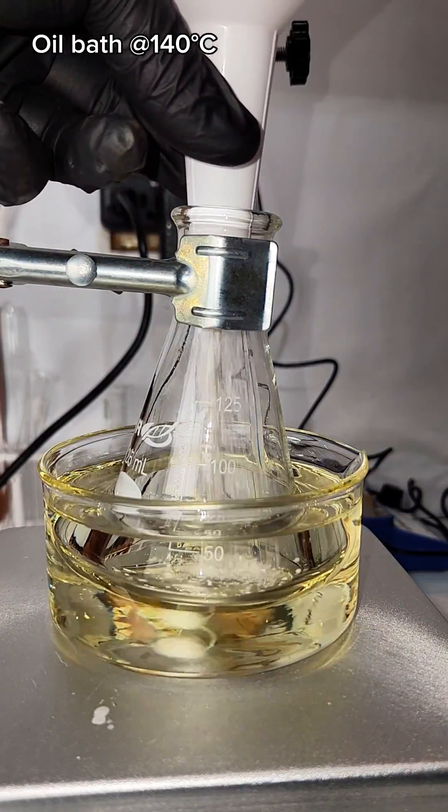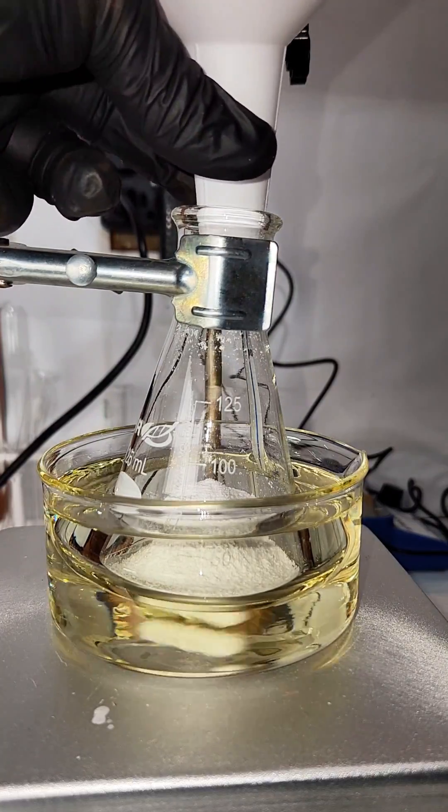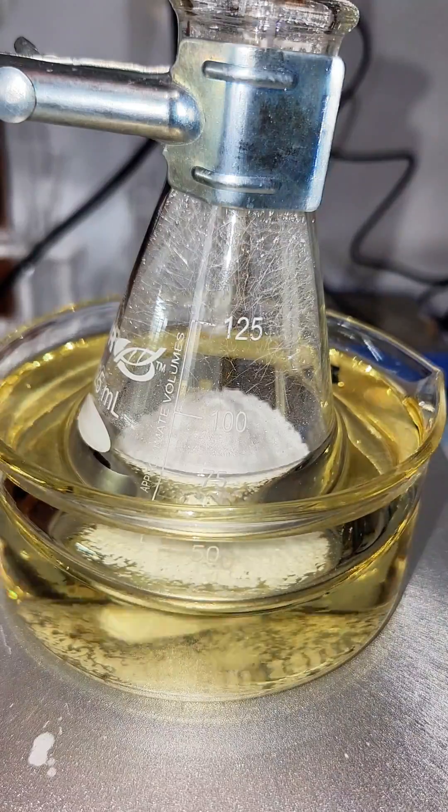I then transfer this to a small Erlenmeyer flask that's been suspended in an oil bath set to 140 degrees Celsius. This will eventually melt the phthalamide and then the two can start reacting.